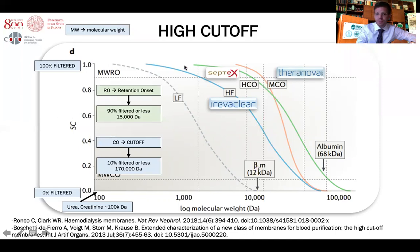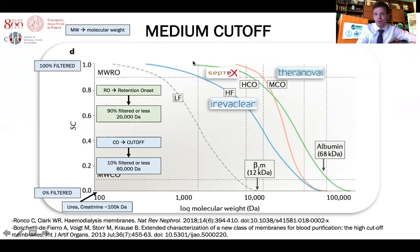Using a high cutoff membrane, the retention onset is 50,000 daltons and the cutoff is 170,000 daltons — well above albumin's molecular weight, which means albumin is lost in this treatment. For the median cutoff membrane, the retention onset is 20 kilodaltons and the cutoff is 60 kilodaltons. Since albumin has 68 kilodaltons, the cutoff is for molecules smaller than albumin, which is desirable.